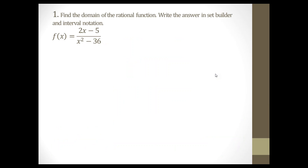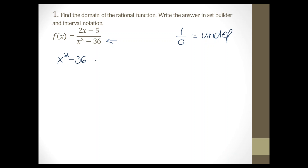Our first question for test 3 is: find the domain of the rational function and write the answer in set-builder and interval notation. This is a rational function. When they ask us to find the domain, we're basically looking for the value or values that would make the denominator of this fraction undefined. Because when you have a fraction and there's a zero in the denominator, the fraction would be undefined.